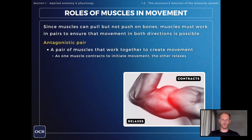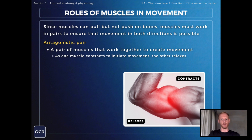Since muscles can pull but not push on bones, muscles must work in pairs to ensure that movement in both directions is possible. A pair of muscles that work together is called an antagonistic pair. As one muscle contracts to initiate the movement, the other one relaxes to allow that movement to occur.